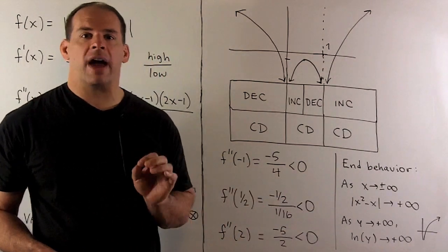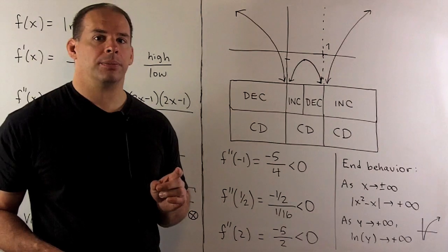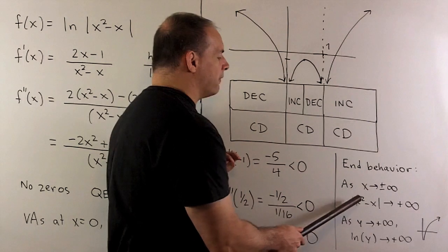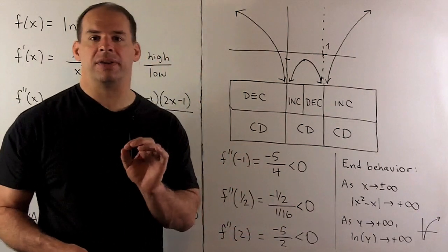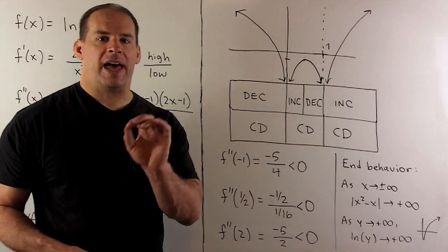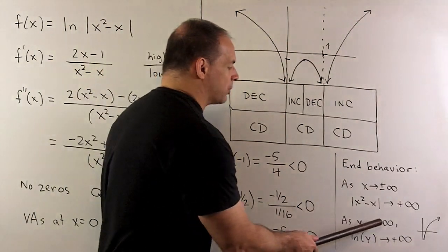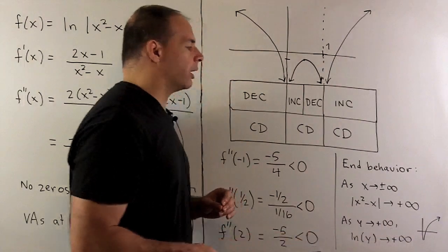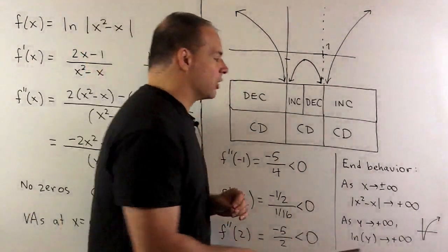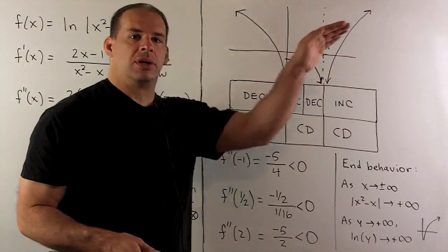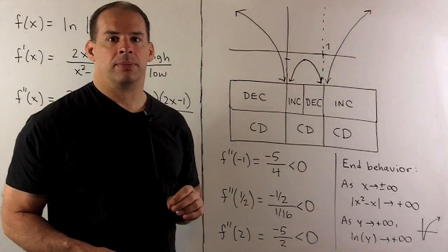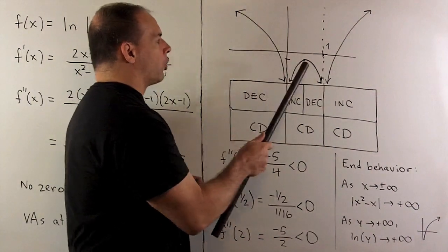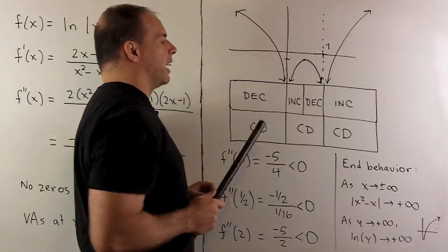The final thing needed for the graph is end behavior. As x → ±∞, |x² - x| → +∞. Plugging into natural log: as y → +∞, ln(y) → +∞. So as x → ±∞, our graph shoots off to +∞ on both ends.